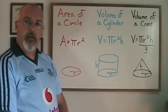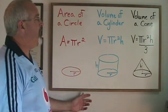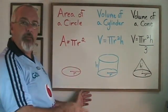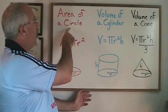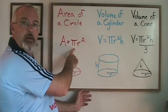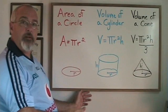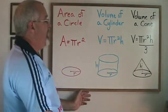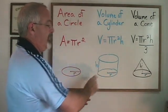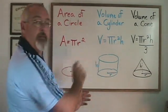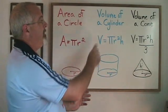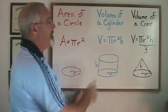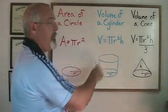As a review, remember that the area of a circle formula is pi r squared. That will give us the area of a circle, and the circle is the bottom of a cylinder. If we find the area of the bottom of a cylinder and multiply it by the height of the cylinder, we get the volume of that cylinder. This is why we don't have to memorize this formula — it is simply pi r squared times the height of the cylinder.